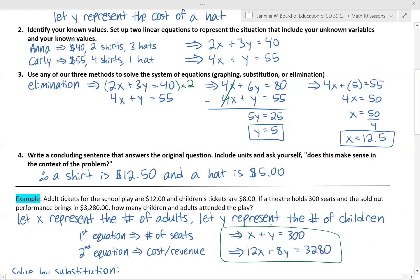X can represent the number of adults, Y can represent the number of children. Now we have to set up our two equations. What makes sense based on the information we do know?